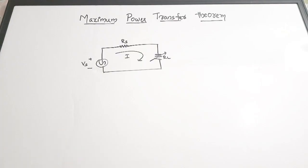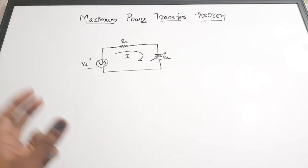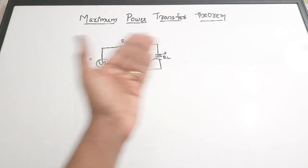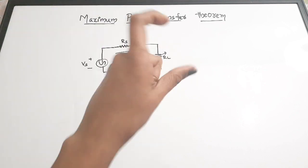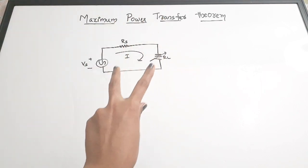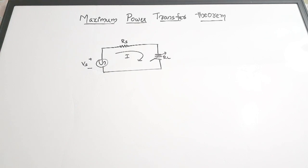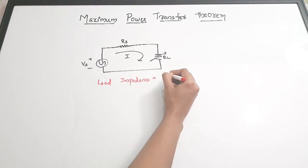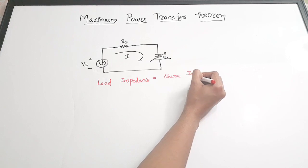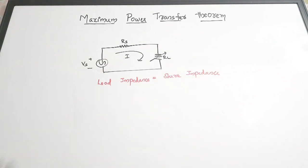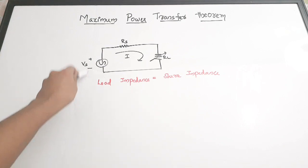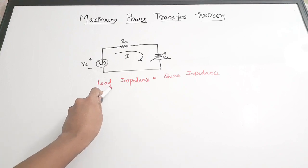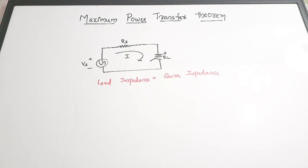In today's video we are going to discuss the Maximum Power Transfer Theorem. According to this theorem, the maximum power is delivered from the source to the load resistance when the load impedance is equal to the source impedance. That is when load impedance equals source impedance, maximum power transfer is taking place.